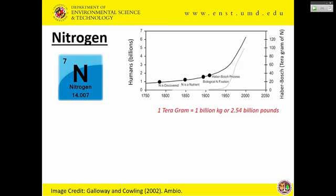On this side of the slide, you can see how much fertilizer we began making. This scale is in teragrams — one teragram is about 2.5 billion pounds. Currently we make more than 250 billion pounds of fertilizer via the Haber-Bosch process.